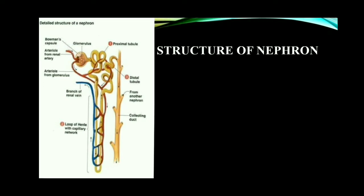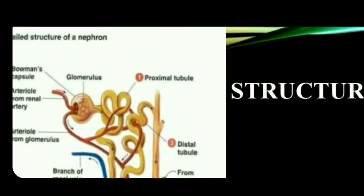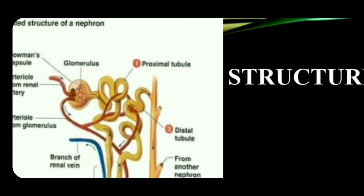Now let's study the second part of the nephron: the renal tubule. This renal tubule consists of three parts: proximal convoluted tubule, distal convoluted tubule, and loop of Henle. Proximal convoluted tubule — tubule means tube-like structure, convoluted means twisted, and proximal means near. So this proximal convoluted tubule is located very near to the Bowman's capsule.